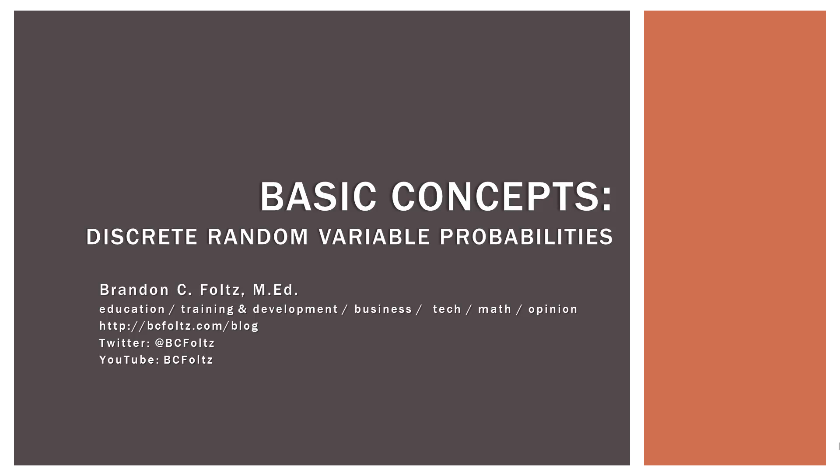Now in this video, we're going to continue our discussion of random variables, more specifically discrete random variables. In other videos I've talked about random variables generally, and a little bit about the difference between discrete random variables and continuous ones. So we're going to go into discrete random variables and start assigning probabilities to certain outcomes. Once we're done, you'll have a good grasp of how the idea of probability relates to discrete random variables.